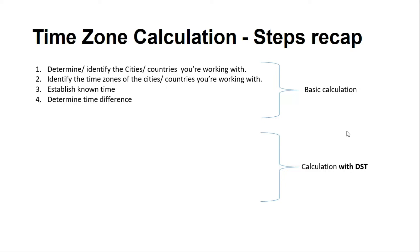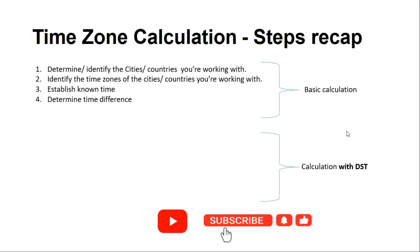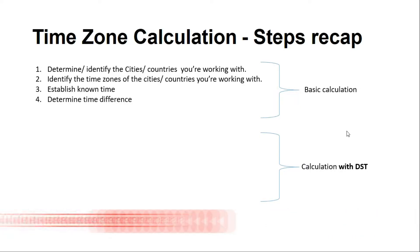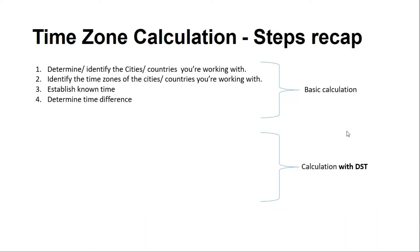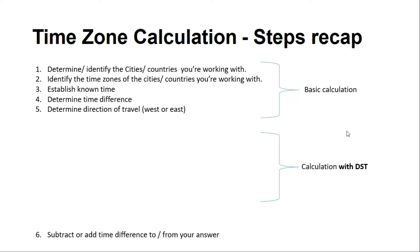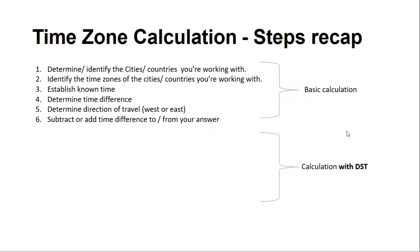Step four is to determine the time difference between the two countries, followed by step five: determining the direction of travel. This tells us whether we are losing or gaining time — in other words, whether we will be subtracting or adding. Step six is where you subtract or add the time difference from the known time to get your answer.